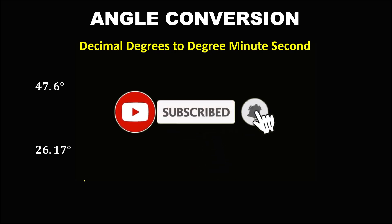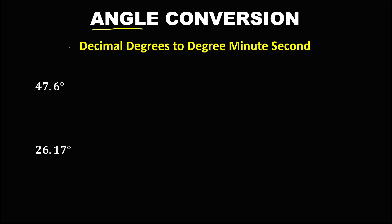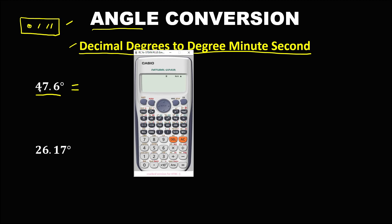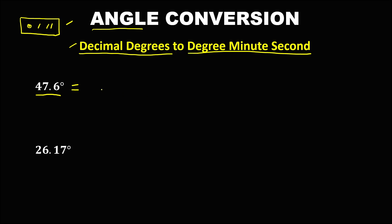Let's solve this angle conversion problem. Convert this decimal degrees to degrees, minutes, and seconds — we only need the degree-minute-second function in your calculator. For the given 47.6 degrees, using your calculator with this function: input 47.6, then press degree-minute-second, then equals. The result is 47 degrees and 36 minutes.